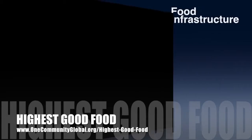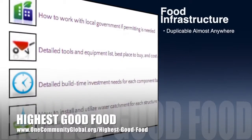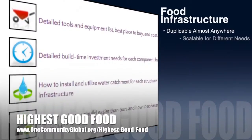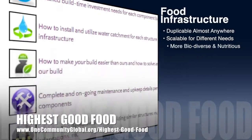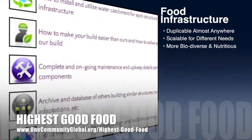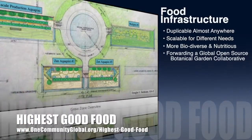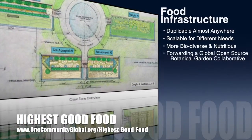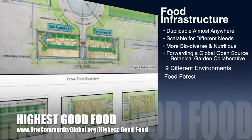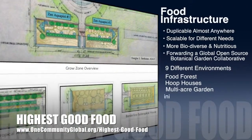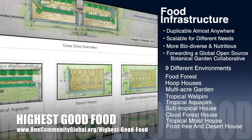One Community's approach to highest good food is duplicable almost anywhere, scalable for different needs, more biodiverse and nutritious, part of forwarding a global open source botanical garden collaborative, and includes nine different free shared and duplicable growing environments.